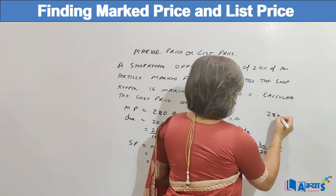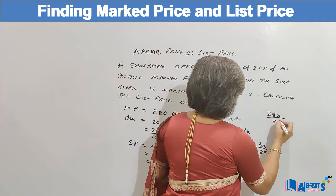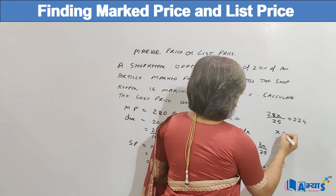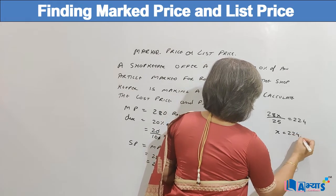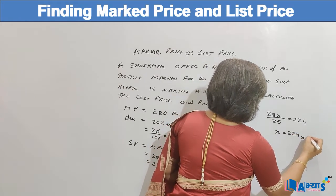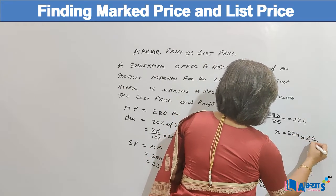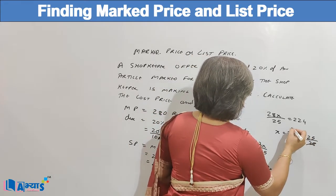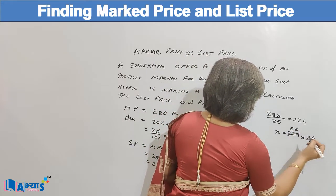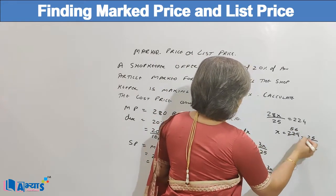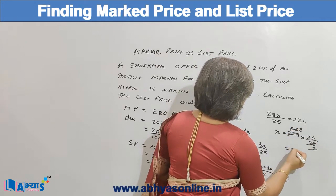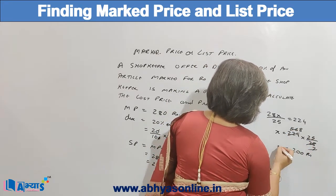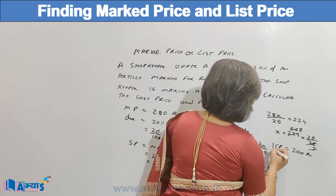Equating the two expressions, we get 28X/25 = 224. So X = 224 × 25/28. On simplifying, dividing by 4 gives 56 and 7, then we get 8. And 25 × 8 is Rs. 200. So the cost price is Rs. 200.